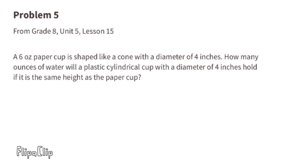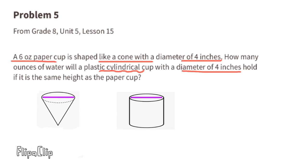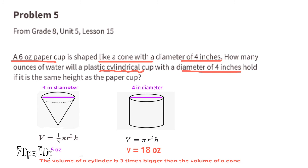Problem number 5, from 8th grade Unit 5 Lesson 15. A 6-ounce paper cup is shaped like a cone with a diameter of 4 inches. How many ounces of water will a plastic cylindrical cup with a diameter of 4 inches hold if it is the same height as the paper cup? The two cups have the same diameter and same height. A cylinder with the same dimensions holds 3 times the amount as a cone. Since the cone holds 6 ounces, the cylinder holds 3 times that — 18 ounces.